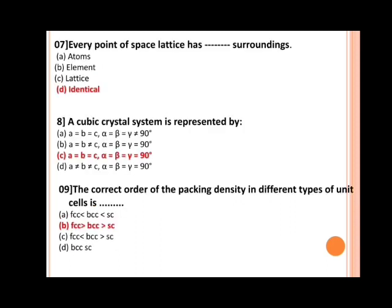Every point of space lattice has dash surroundings. Options are: a) atoms, b) elements, c) lattice, d) identical. The correct answer is D, identical.